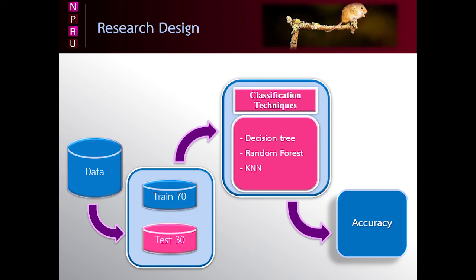Step 3: Split data. We split data into 2 parts, train and test data. We use 70% of data as a training set and 30% as a test set. Step 4: Building model. We use 3 classification techniques including decision tree, random forest, and KNN.